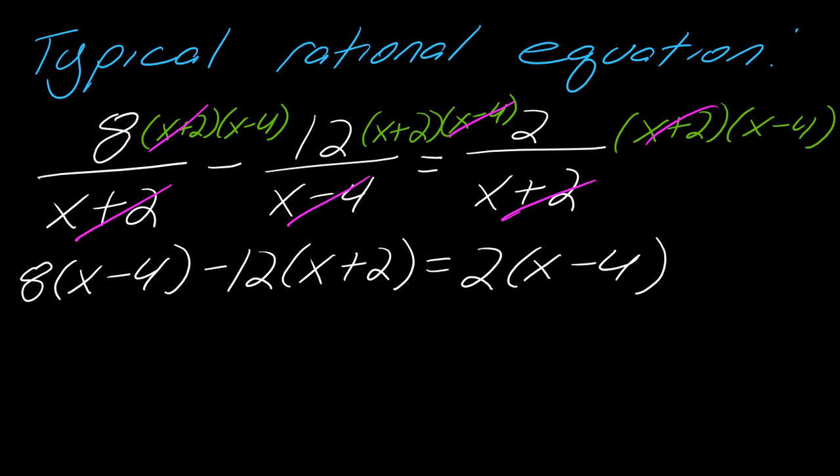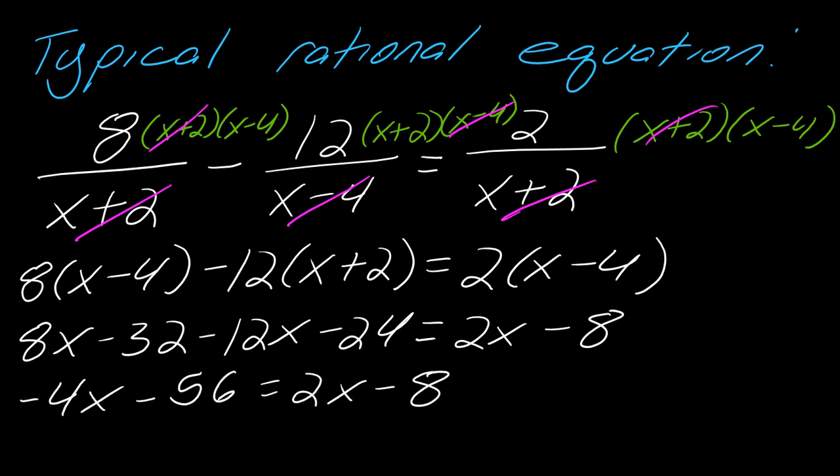If I went ahead and distributed, I would have this result here, and then I would collect my like terms to get this. Then I'd want to get my x's on one side and my numbers on the other. I'm just kind of quickly going through the idea of this to remind you how this works. I'd get this result here, and ultimately I'd get that x equals negative 8.